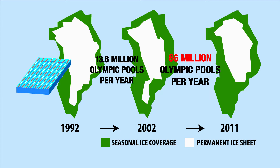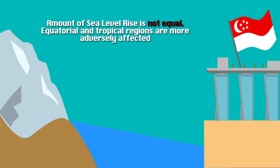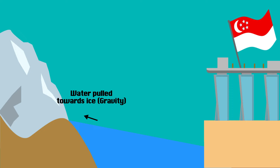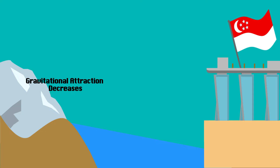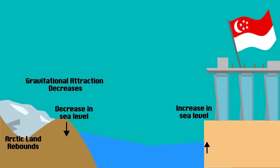Furthermore, the amount of sea level rise is not equal. Equatorial and tropical regions are more adversely affected. Ice sheets' large mass allows them to attract ocean waters towards them, raising surrounding sea level. When an ice sheet melts, its gravitational attraction decreases, and sea level around it can go down. Conversely, regions far from a melting ice sheet will see a rise in sea level. When a Greenland ice sheet melts, areas furthest away in the equatorial regions have the greatest impact.